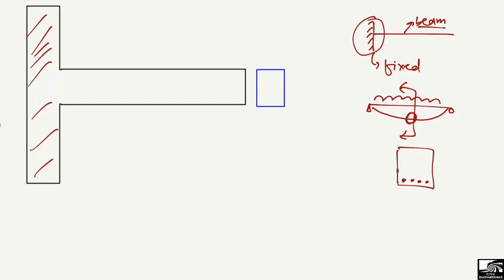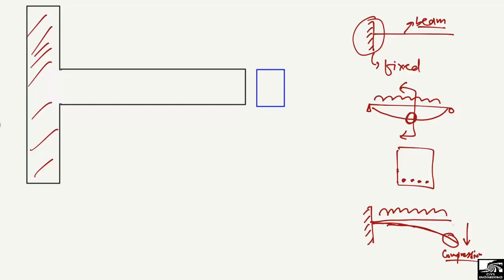Now, what about the cantilever beam? When a load acts on it, the deflection shape and bending moment are different. The beam deflects like this — the maximum deflection is at the free end. We can see that the bottom part of the beam is in compression, which is fine for concrete. But the top part of the beam will be in tension, and since concrete is weak in tension, we must provide reinforcement at the top portion of the beam.